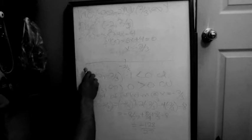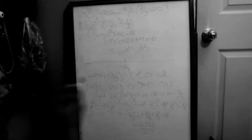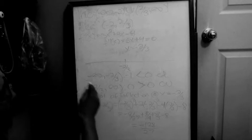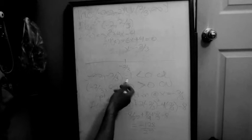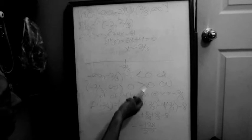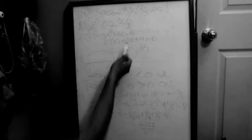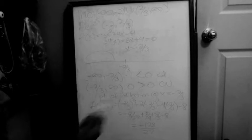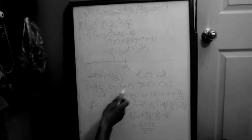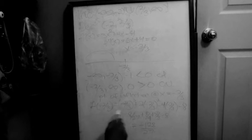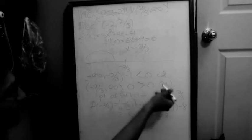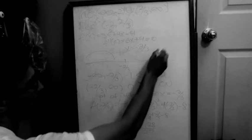Now I'll find the concavity using this graph. From negative infinity to −2/3, I plug in x = −1 into the second derivative and get a number less than 0, so the function is concave down on that interval. From −2/3 to infinity, plugging in x = 0 gives a positive number, so the function is concave up on that interval.